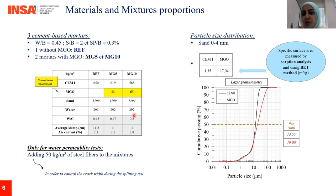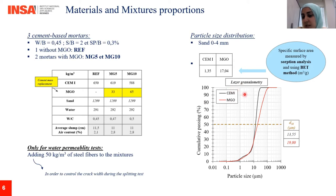The sand used was sized between 0 and 4 mm. The specific surface area of the Portland cement and the MgO were characterized by sorption analysis using the BET method. You can see that the surface area of the Portland cement is much smaller than that of the MgO. This is also shown by laser granulometry, where the major particles of the Portland cement are less than 14 microns, while those of MgO are higher than 19 microns.